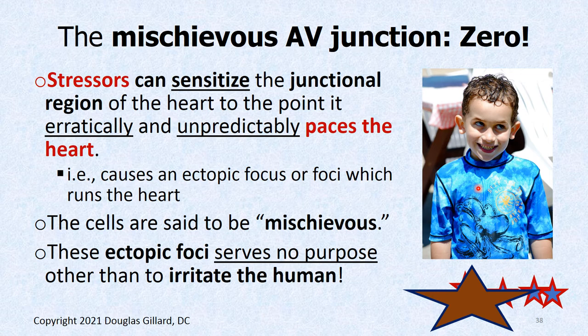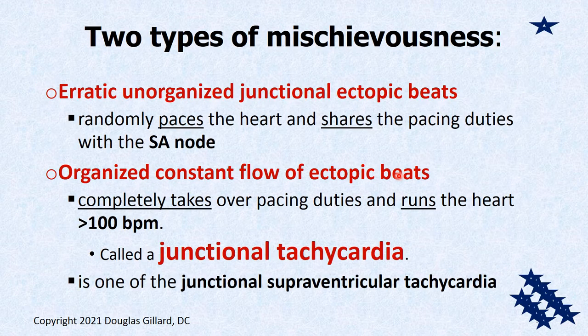There are two types of mischievousness: erratic unorganized chaotic beats — maybe five in one minute, then a hundred the next hour — or more organized, going into what's called a tachycardia at a perfect rhythm of 130 beats per minute. This is called a junctional tachycardia. Tachycardia is any heart rate over 100 beats per minute, and junctional tachycardia is caused by ectopic foci or focus in the junctional region. That is one of the supraventricular tachycardias.